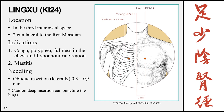Lingxu, Kidney 24, is located in the 3rd intercostal space, 2 cun lateral to the Ren meridian. Indications: cough, polypnea, fullness in the chest and hypochondriac regions, and mastitis. Needling: oblique insertion laterally 0.3 to 0.5 cun. Caution against deep, perpendicular, or deep oblique insertion as there is risk of puncturing the lungs.